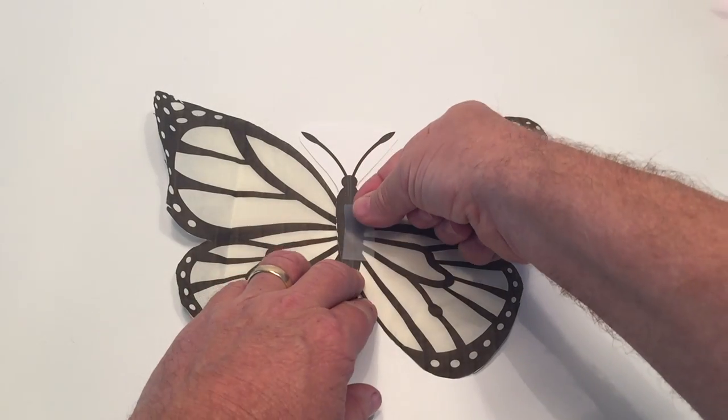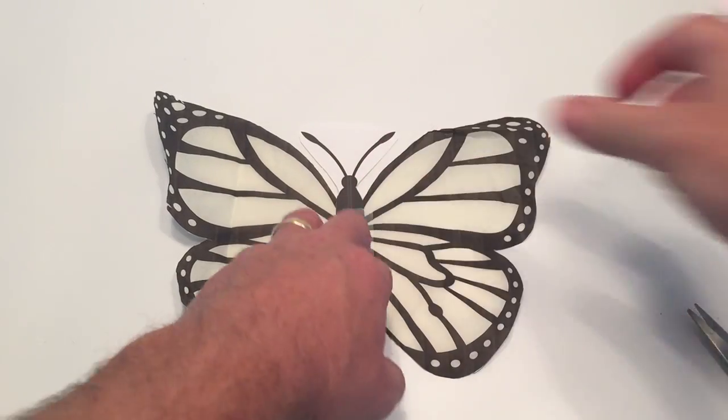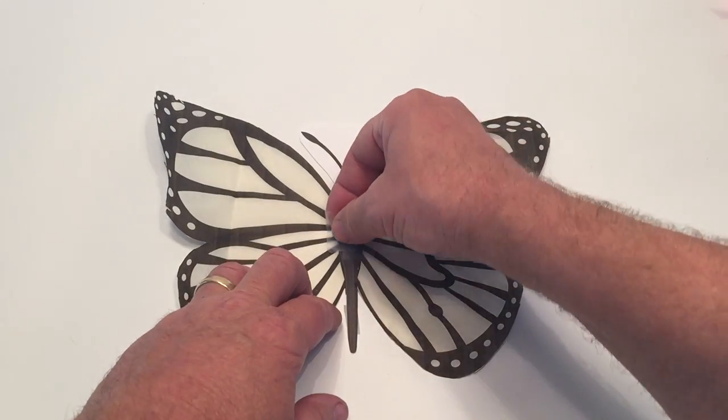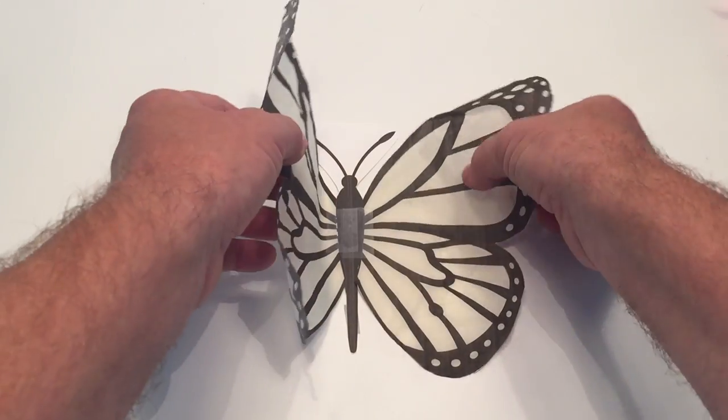Once I get just like this, this way, now the wings won't slide back and forth for the experiment. And now we're completely set up and we're ready to do the experiment.